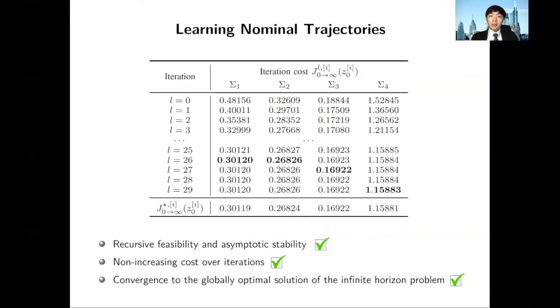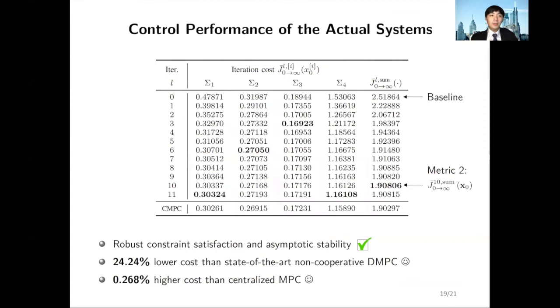Let's first look at the learning outcome of nominal subsystems. In this table, I'm showing the iteration cost for the four subsystems over all iterations. In the bottom line, I'm also showing the optimal cost of the infinite horizon control problem as a comparison, obtained by solving the optimal control problem with a long enough horizon. For all iterations, we're able to guarantee recursive feasibility and asymptotic stability. You may observe that the iteration cost of all subsystems converges to the infinite horizon solution after 29 iterations, and the costs are non-increasing over all iterations.